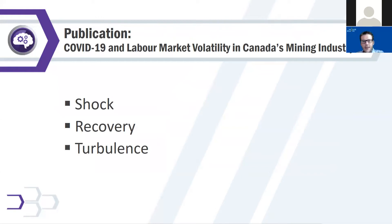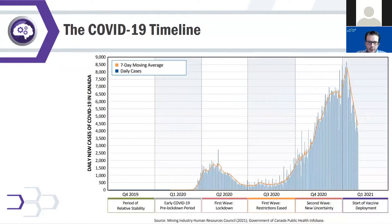If I had to summarize this into a few words, they would be these three: shock, recovery, and turbulence. Before we dive into that, the first thing we need to do is establish a timeline. This is the chart of daily new COVID-19 cases up to January, which gives us a good representation of a timeline for this pandemic.